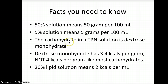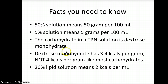The next thing you need to know is that the carbohydrate in a TPN solution is dextrose monohydrate — a molecule of dextrose with a single water molecule bonded to it. Because some of the weight of the molecule is taken up by this water, it doesn't have as many calories as most carbohydrates. So dextrose monohydrate has 3.4 kcals per gram, not 4 kcals per gram like most carbohydrates.